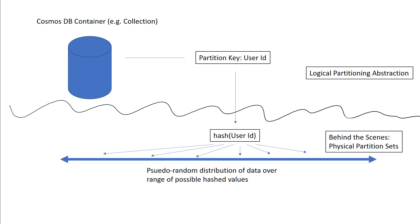Partition keys are a logical partitioning abstraction. Each one of our user IDs — say user ID equals Andrew, user ID equals Bob — each of them is going to be a logical partition containing a set of records. Cosmos DB will then take these logical partitions and compact them to a smaller number of physical partitions, yielding a very frugal use of the underlying compute hardware. The means for mapping logical partitions to physical partitions is a technique called consistent hashing.